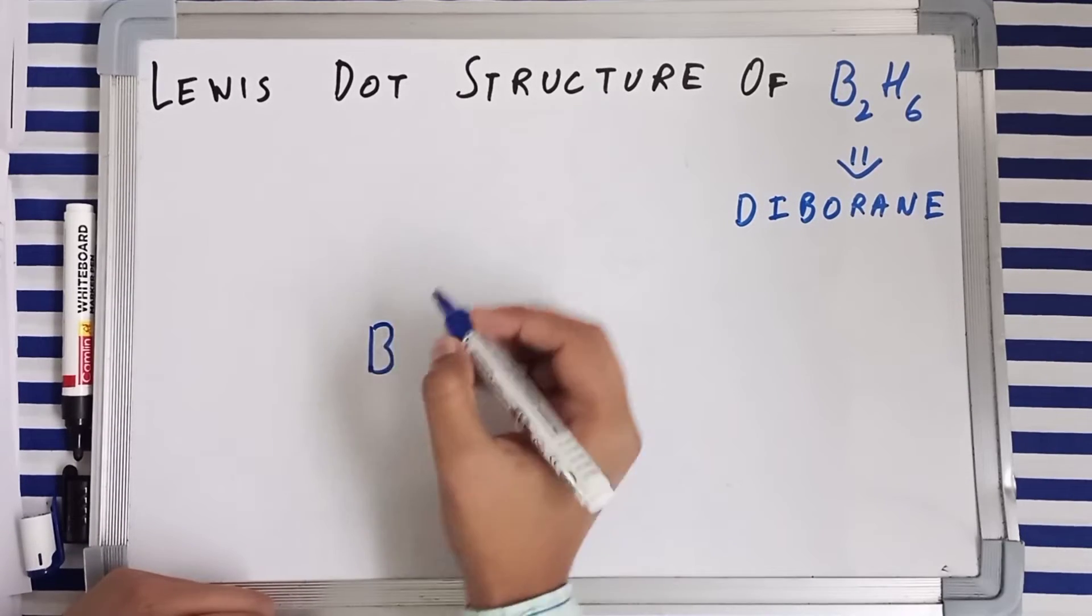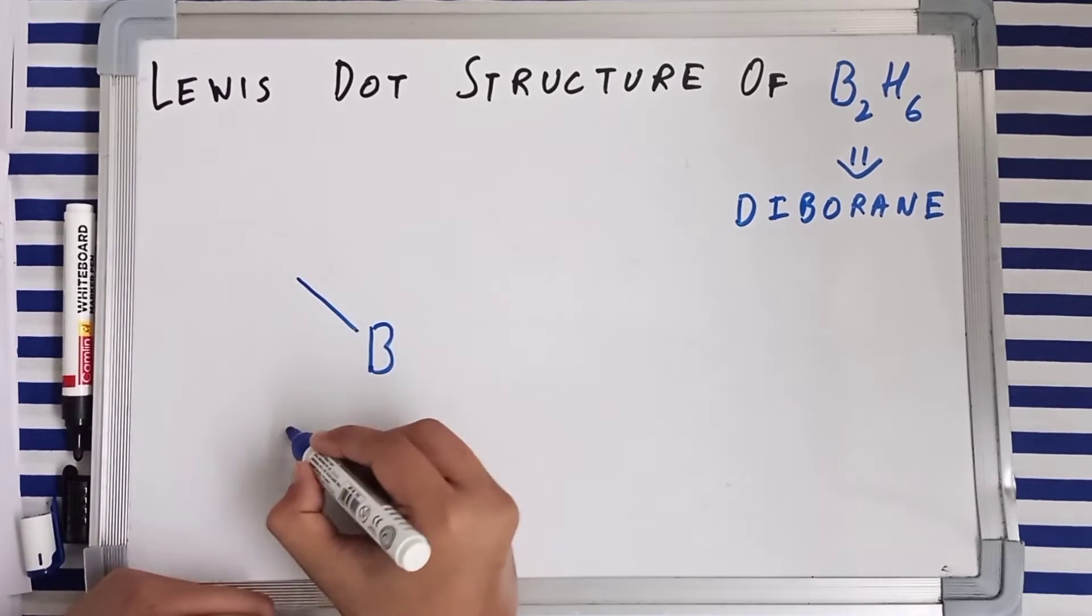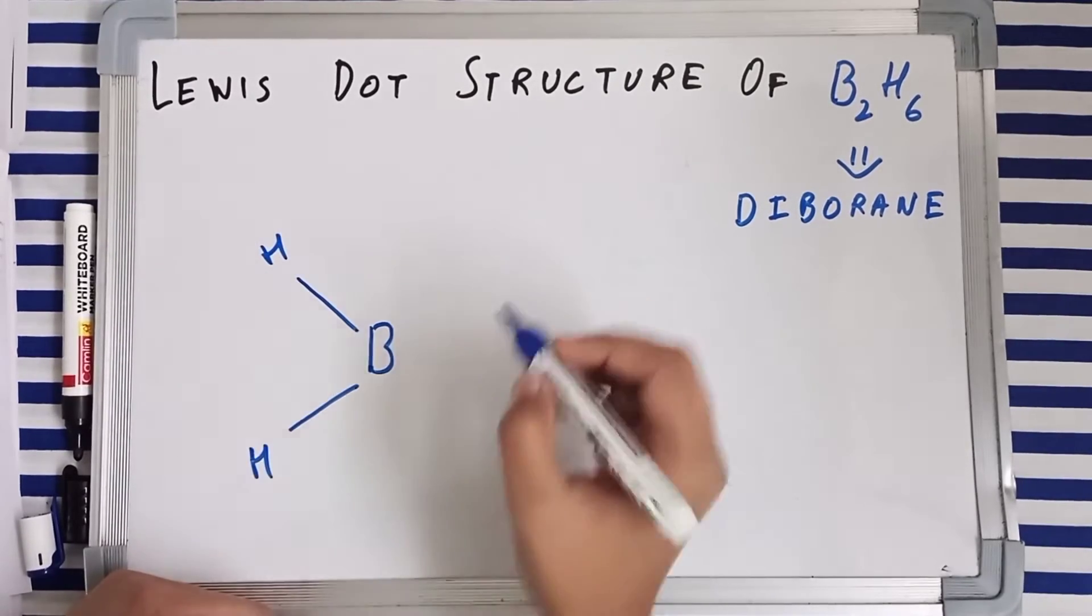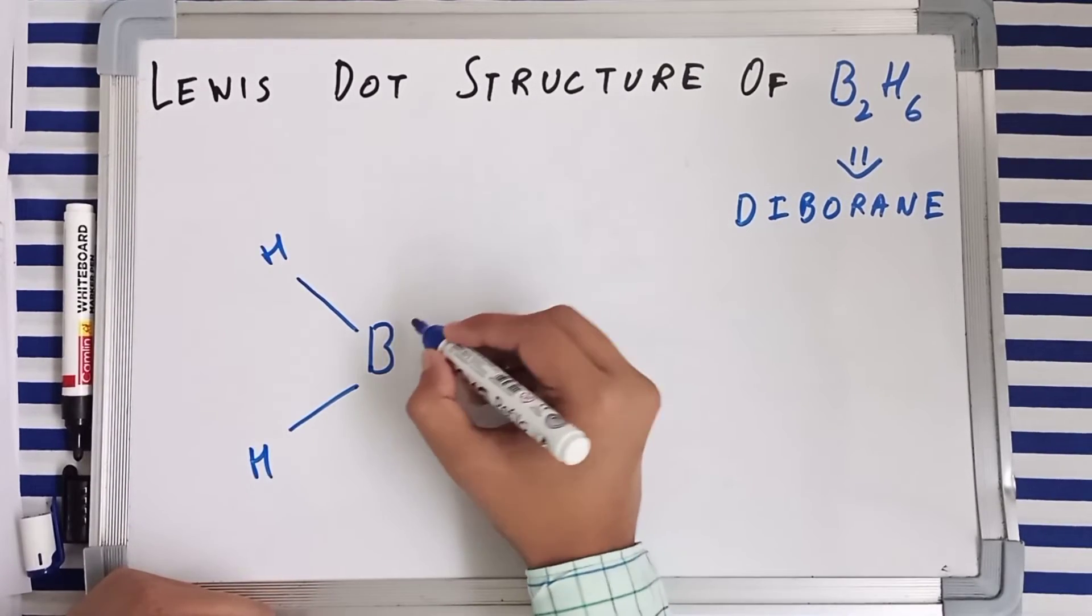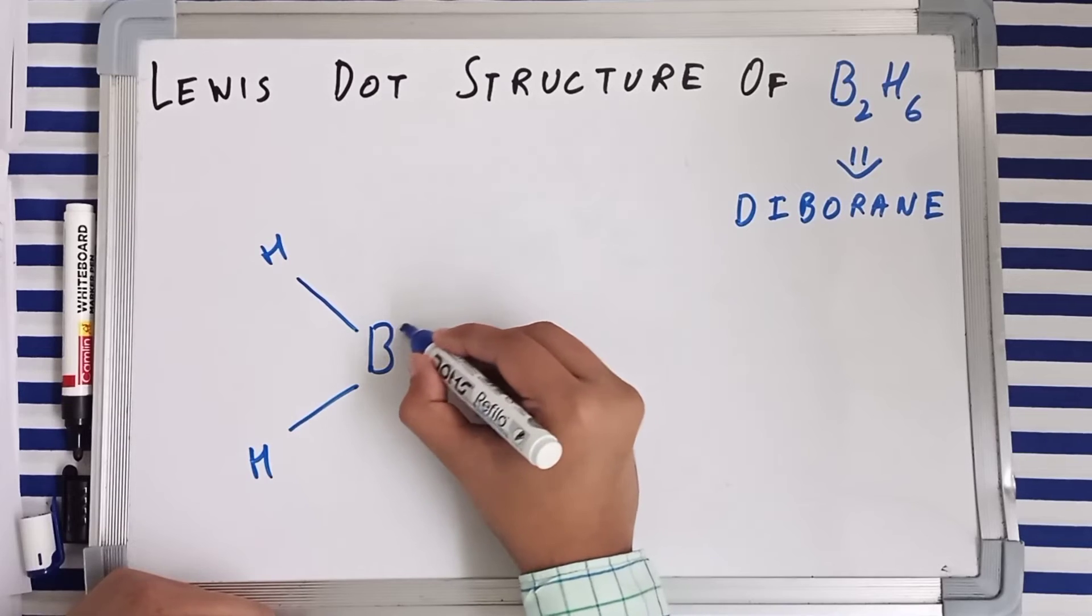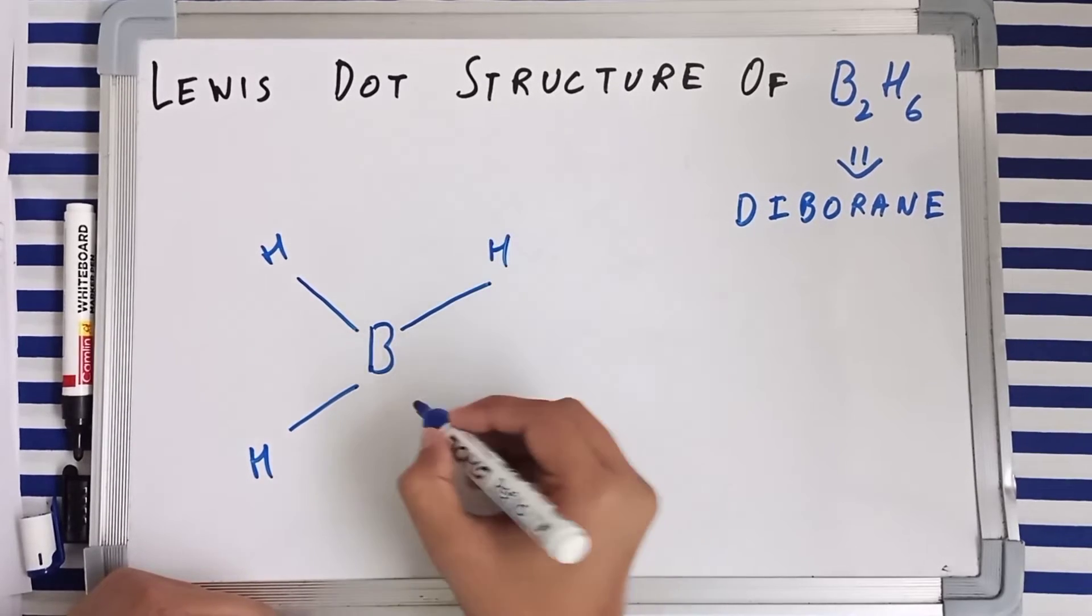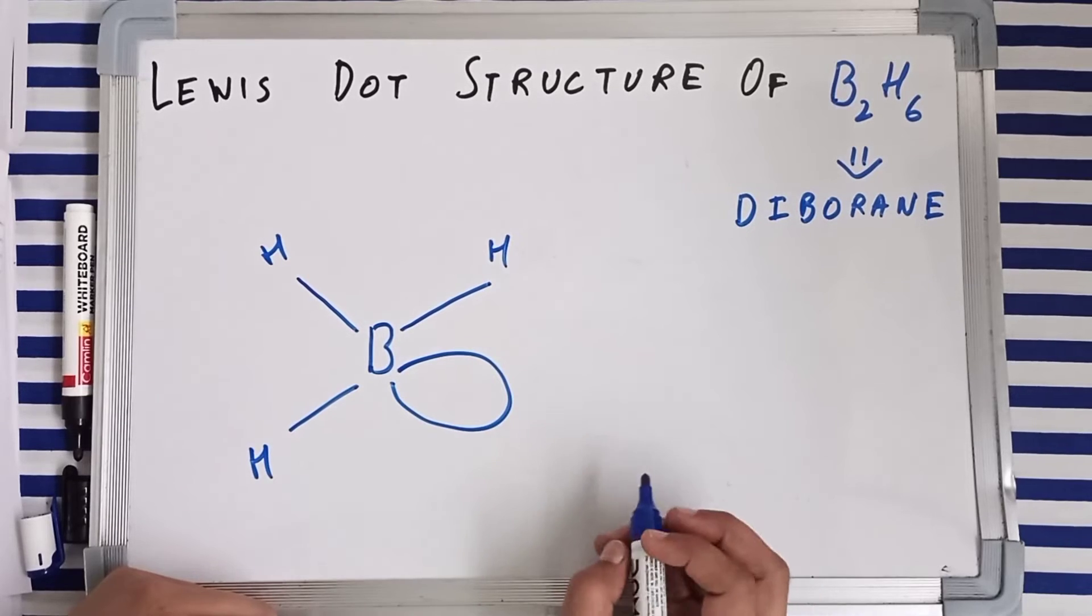What happens is that you got a boron having three hydrogen atoms and a vacant 2p orbital.